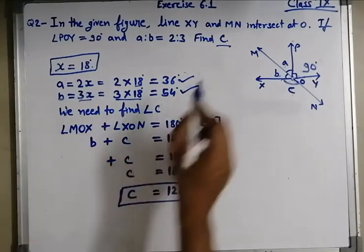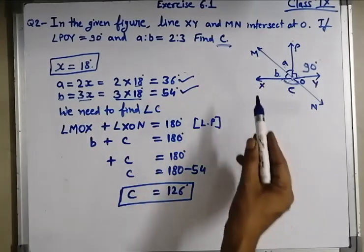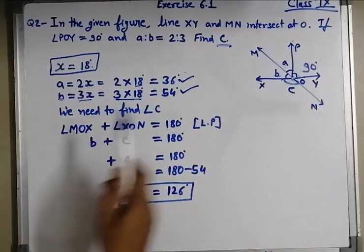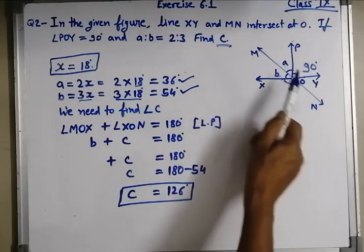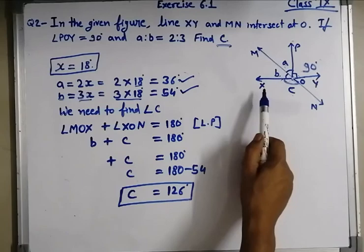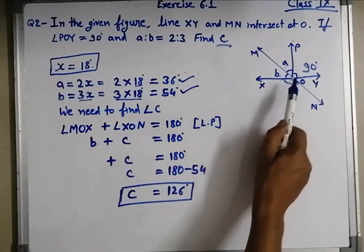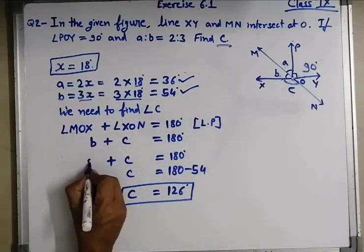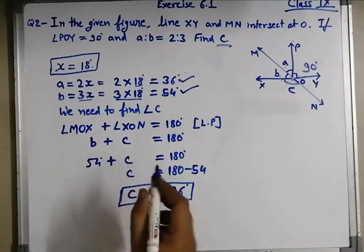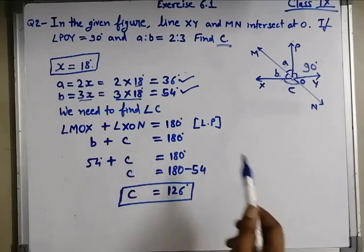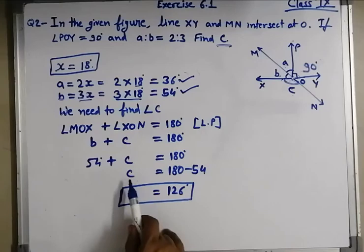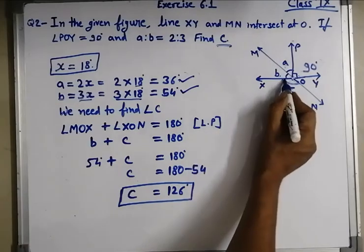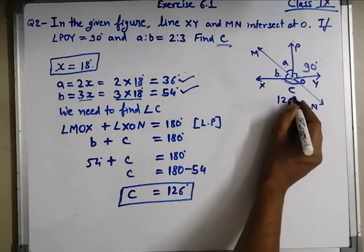We need to find angle C. Again we are using linear pair on line MN. Angle MOX, which is B, and angle XON, which is angle C. The value of B we have already found is 54 degrees. So 54 plus angle C is equal to 180 degrees. Transferring to the right hand side: angle C is equal to 180 minus 54. So angle C is 126 degrees.